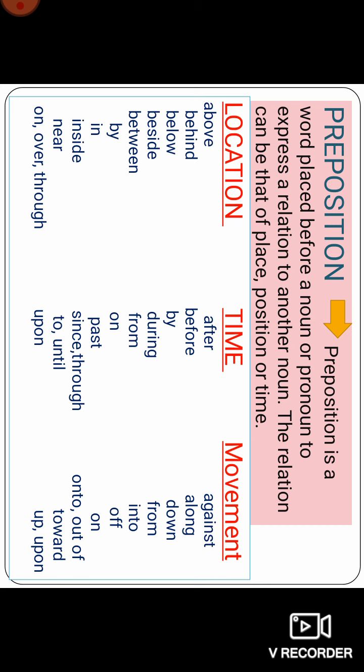Under location we have a lot of prepositions: above, behind, below, beside, between, by, in, inside, near, on, over, through. These are the location prepositions.